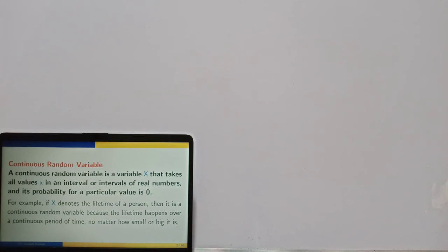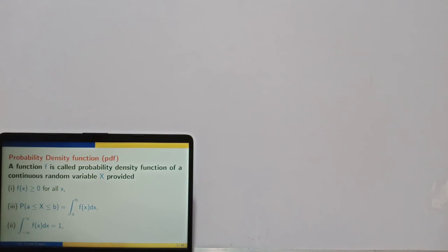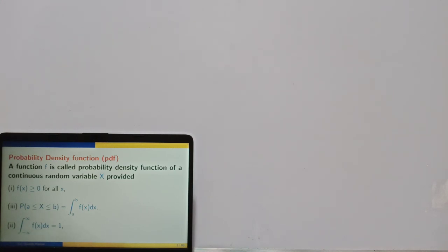A continuous random variable takes values in an interval. Next, the probability density function — recall the definition of the probability mass function for discrete random variables. A function f is called a probability density function (PDF) of a continuous random variable x provided: f(x) is non-negative for all x, the probability of x in an interval is given by the integral of f(x) from a to b, and the integral of f(x) over the whole range of x from minus infinity to infinity equals one.